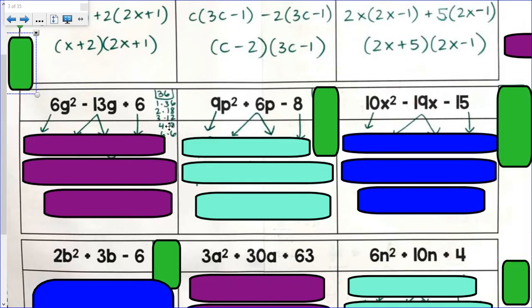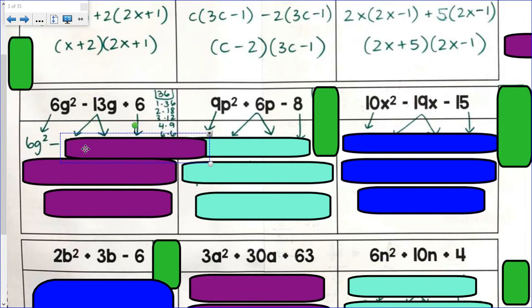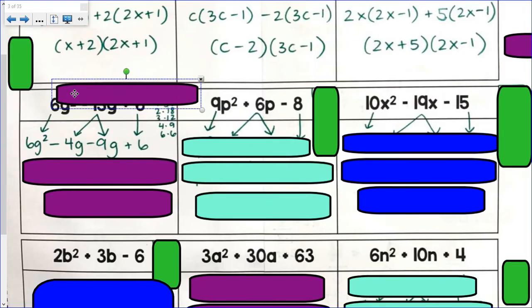If you said negative 4 and negative 9, you're correct. If these are both negative, they'll add up to get negative 13. And if they're both negative, they will multiply to get positive 36. So 6g² minus 4g minus 9g plus 6.